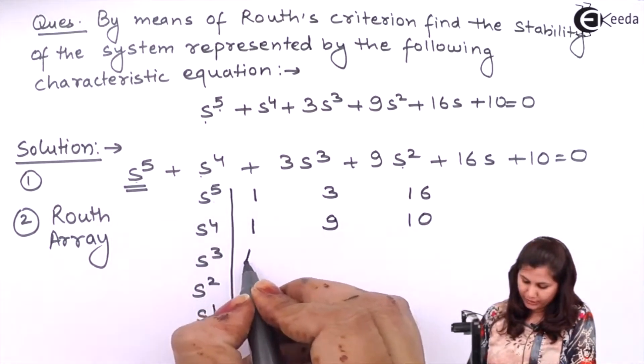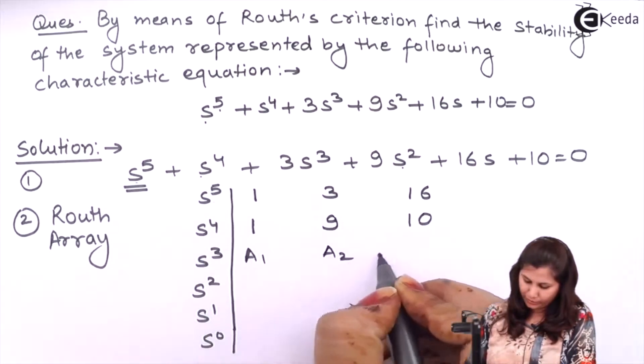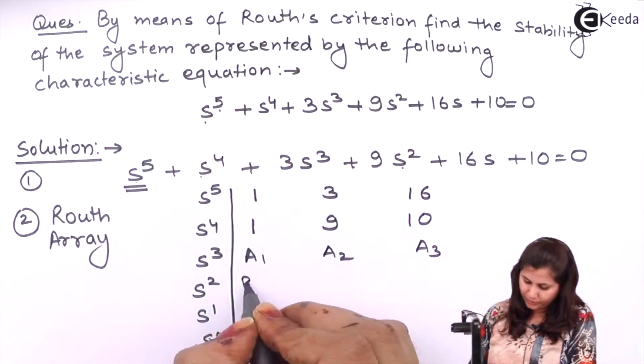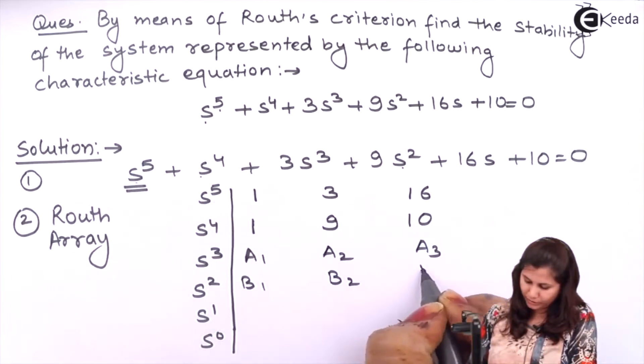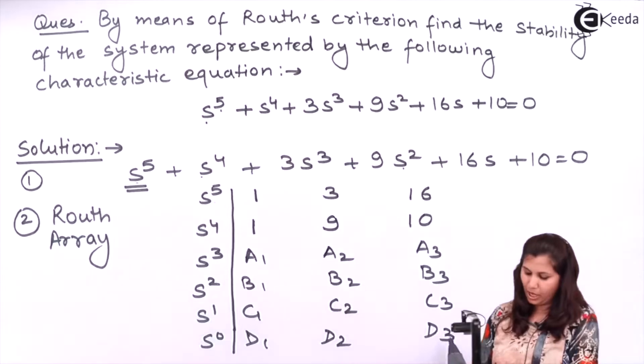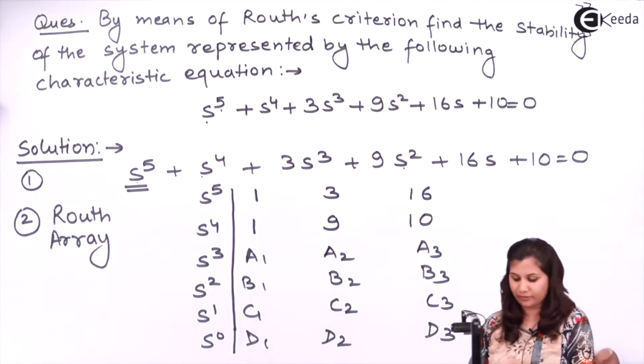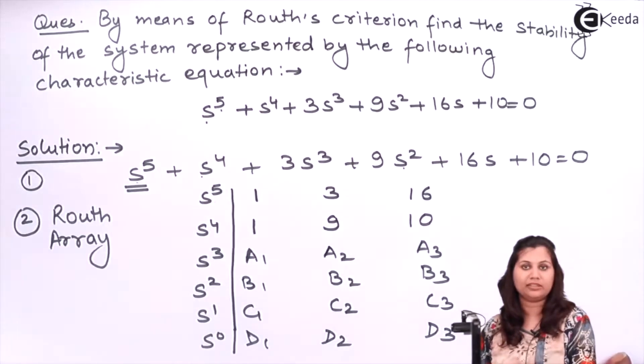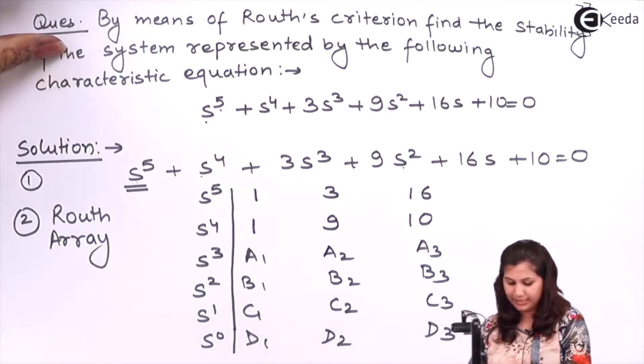Now the elements of next rows, they will be a1, a2, a3, b1, b2, b3, c1, c2, c3, and d1, d2, d3. How we are going to determine these variables a1, b1, c1, d1, all these variables? Let's see.